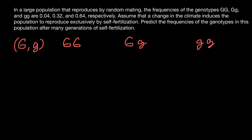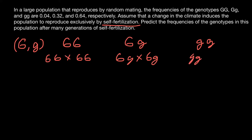Now let's return to our problem. Assume that the change in climate induces the population to reproduce exclusively by self-fertilization. What does that mean? It means that homozygous dominant individuals cross exclusively with homozygous dominant, heterozygous with heterozygous, and homozygous recessive with homozygous recessive.